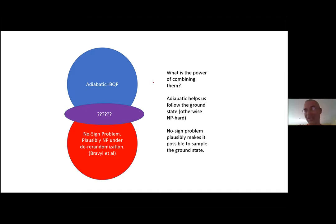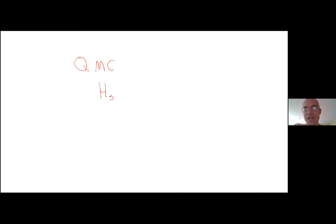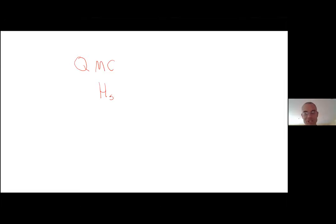But now we ask about the intersection of the Venn diagram: what happens when we combine adiabatic QC with no sign problem? We might expect it to be easy, because with no sign problem the system isn't very quantum — maybe you can find a classical algorithm that samples the ground state if only you could equilibrate it. Path integral Monte Carlo would work great if you could equilibrate. Maybe adiabatic evolution can help us follow the ground state so we don't lose it.